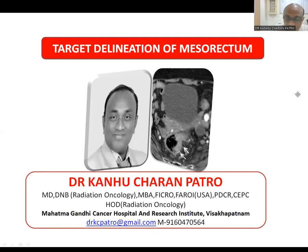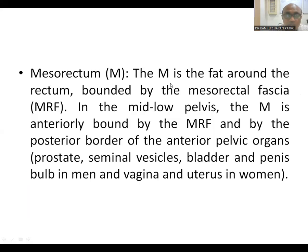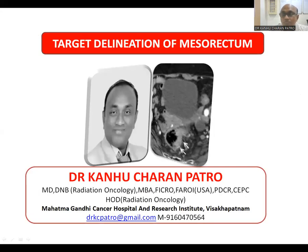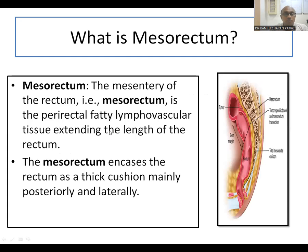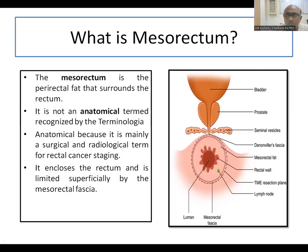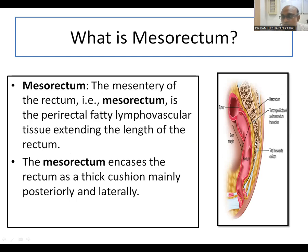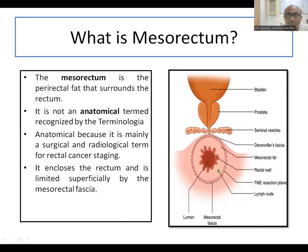The mesorectum is the mesorectal fat around the rectum, bounded by the mesorectal fascia. In the median and lower pelvis, the mesorectum is entirely bounded by the mesorectal fascia and the posterior boundary of the pelvic organs — prostate, seminal vesicles, bladder, penis, and uterus in women. The mesorectum is the perirectal fatty lymphovascular tissue extending the length of the rectum, encasing the rectum as a thick portion mainly posteriorly and laterally. This is the rectum, and the fatty tissue around it is the total mesorectal area.